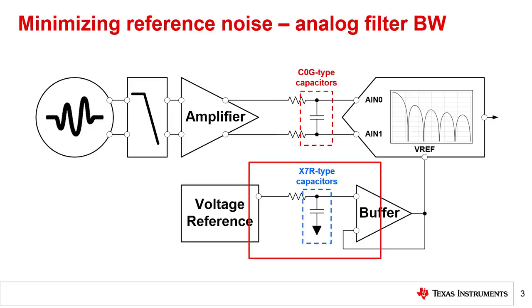Typically, the low-pass filter at the voltage reference output can have a very low cutoff frequency due to the voltage reference's virtually constant DC output voltage.